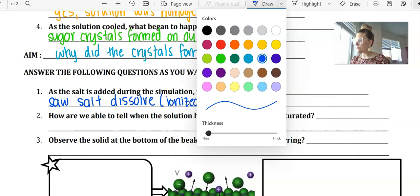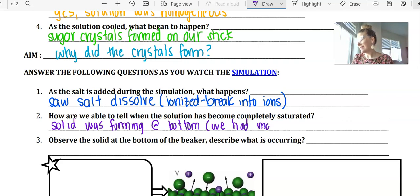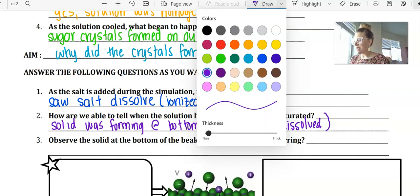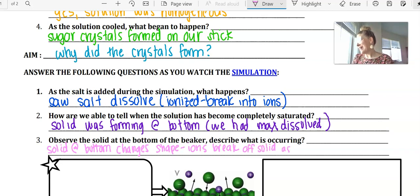And then how are we able to tell that the solution was saturated? Again, we saw that the solid was forming at the bottom. And we had the maximum dissolved. And again, this is the part of question three that I'd love for you guys to try on your own if you can pull up that simulation and really observe that happening at the bottom. But what's occurring? So the solid at the bottom is changing shape. And the reason that it was changing shape is ions break off solid as more ions attach to the solid.